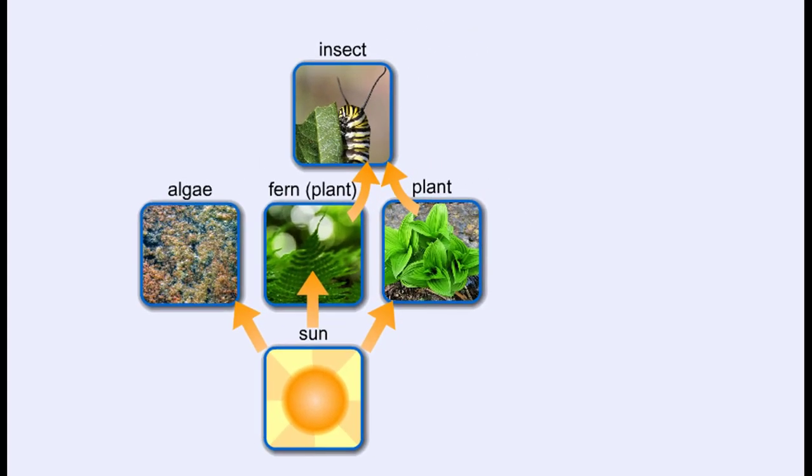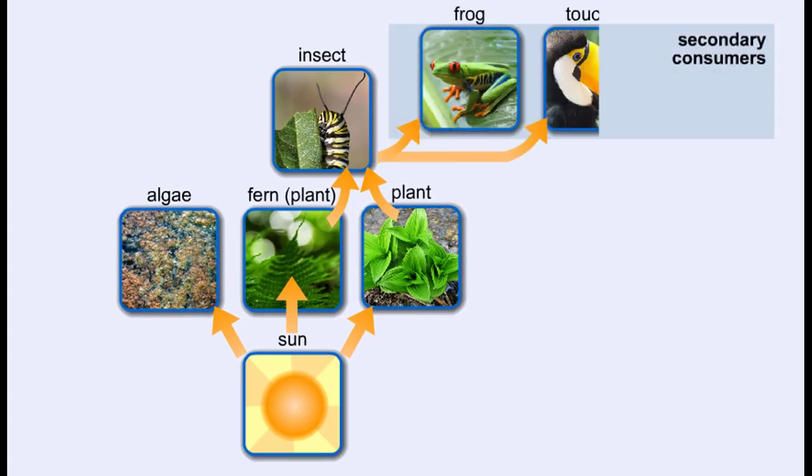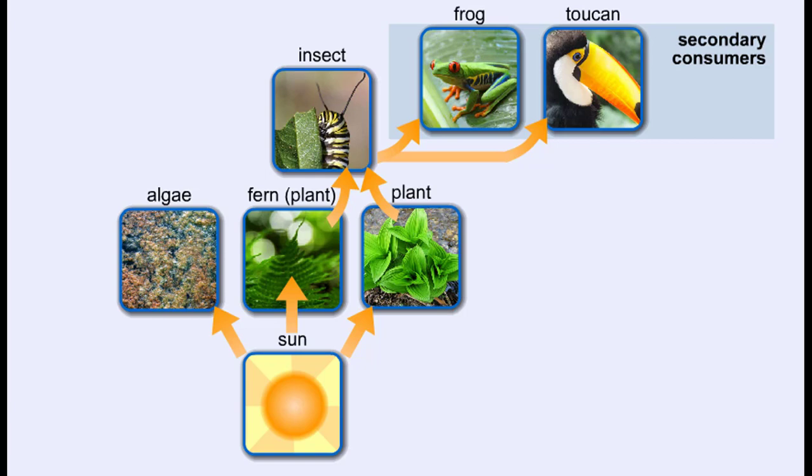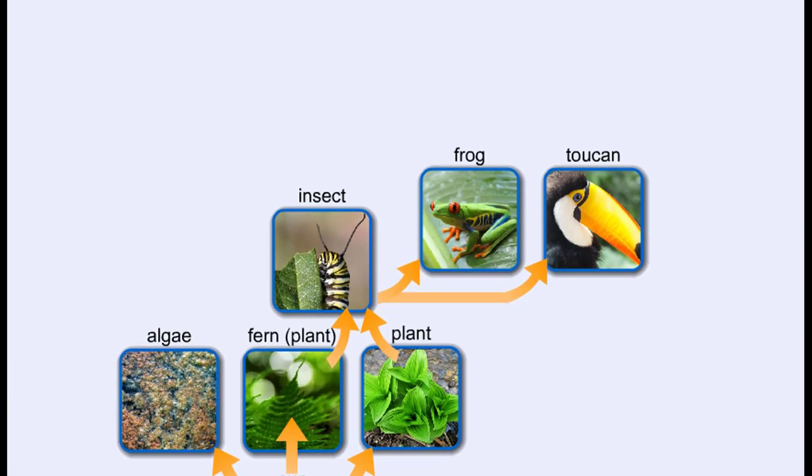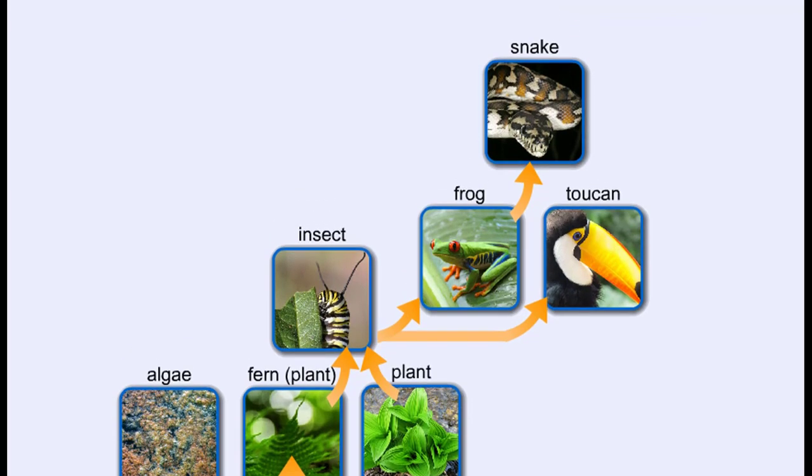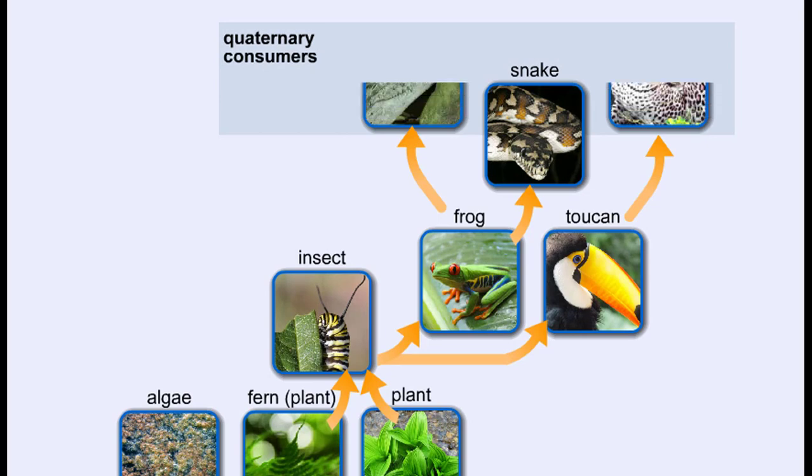The next trophic level consists of carnivores, also called secondary consumers, which are the organisms that eat primary consumers. There can be many more consumers in a community. It is not uncommon for smaller carnivores to be eaten by larger carnivores. These larger carnivores are called tertiary consumers. If a carnivore eats the tertiary consumer, it is called the quaternary consumer, and so on.